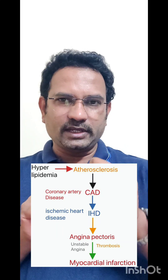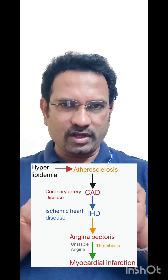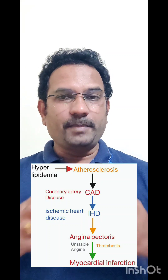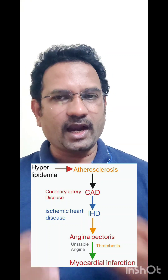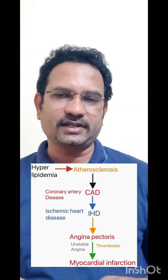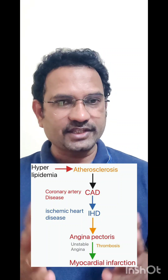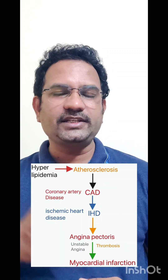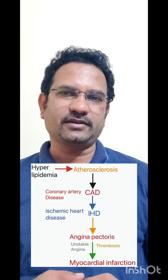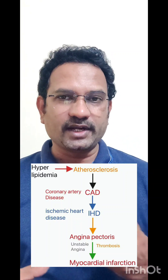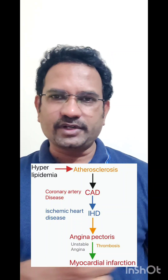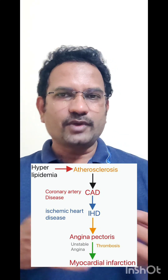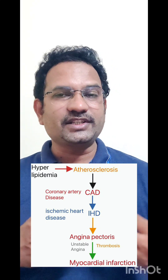In coronary artery disease, the blood vessels are blocked, reducing the heart's blood supply — this is ischemic heart disease (IHD). When the heart's blood supply is reduced, it causes chest pain. Angina pectoris — 'angina' meaning strangulating or pressing, and 'pectoris' meaning chest — is chest pain resulting from reduced blood flow.